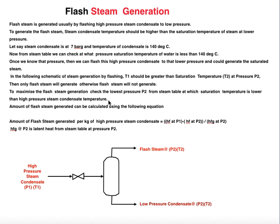The amount of flash steam generated can be calculated using the following equation: [HF(P1) − HF(P2)] / HFG(P2), where HF(P1) is the sensible heat of water at pressure P1, HF(P2) is the sensible heat of water at pressure P2, and HFG(P2) is the latent heat of vaporization at pressure P2. The difference in sensible heat at the two pressures is what drives steam generation.